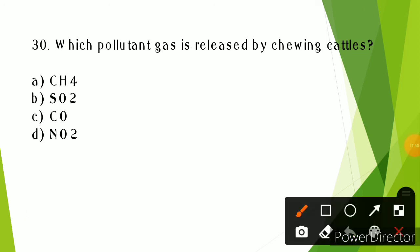This is the last question: Which pollutant gas is released by chewing cattle? The answer is methane. Cattle contain methanogens in their digestive system which digest plant material or cellulose and produce methane gas as a byproduct. So this is all for today's session. If you enjoyed the video, just hit the like button. Thank you and take care.